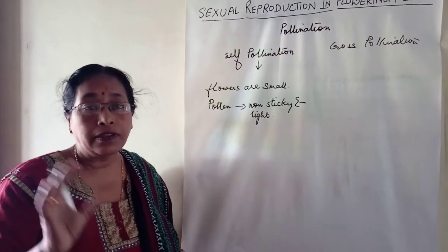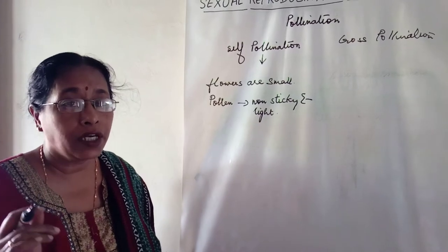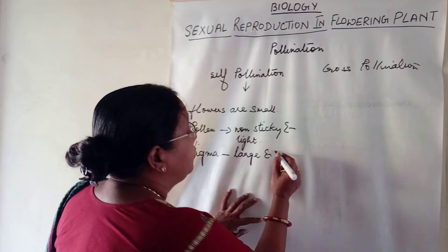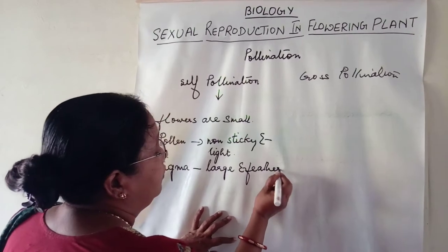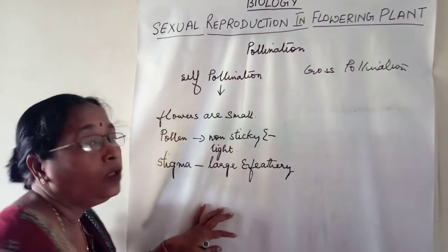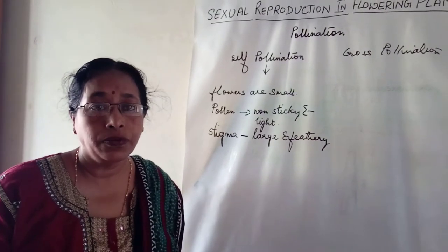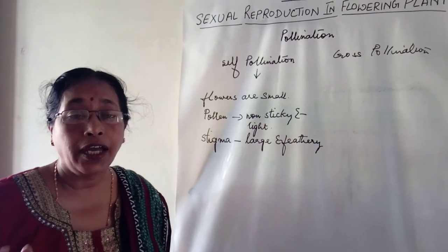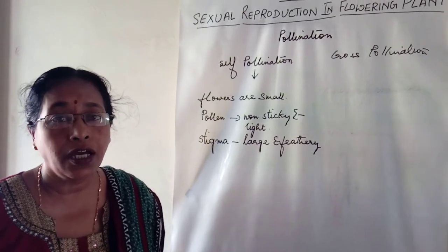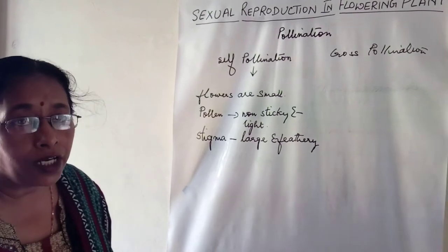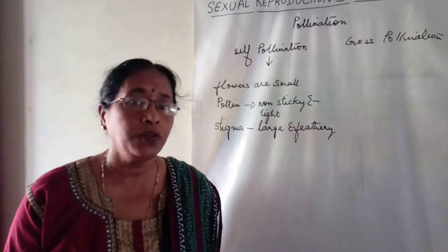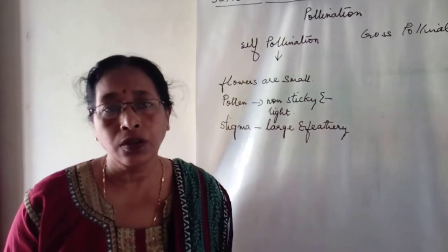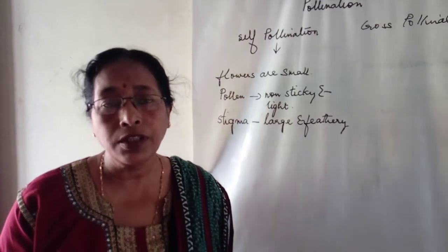The stigma is enlarged — longer in size and feathery. You have seen the tassels of a maize plant; those tassels hanging out are actually the stigma and style of the flowers. The pollen grains produced by these flowers are enormous so as to compensate for the loss caused by wind currents.